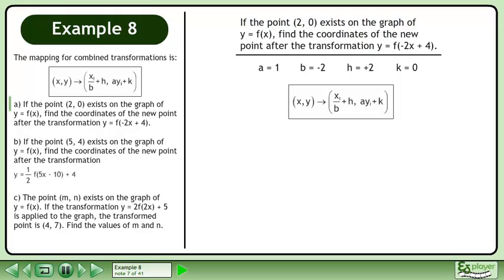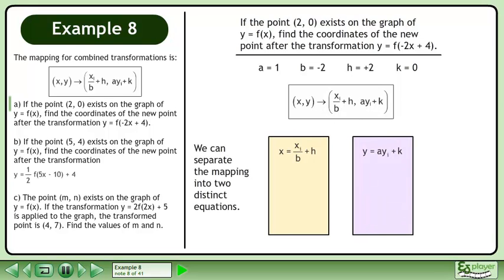Now we'll find the transformed point using a mapping. We can separate the mapping into two distinct equations. Plug in 2 for the initial x value, negative 2 for the b value, and 2 for the h value. This simplifies to negative 1 plus 2. The transformed x coordinate is 1.